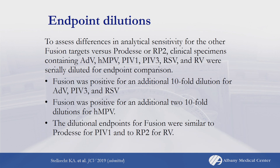For analytical sensitivity of the other targets, we performed an endpoint dilution analysis to see how far out the different assays would still call a sample positive. Compared to Prodesse assays — and BioFire RP2 for rhinovirus — Fusion was able to detect an additional 10-fold dilution for adenovirus, parainfluenza-3, and RSV, and two 10-fold dilutions for metapneumovirus. It was similar to Prodesse for parainfluenza-1 and BioFire RP2 for rhinovirus.